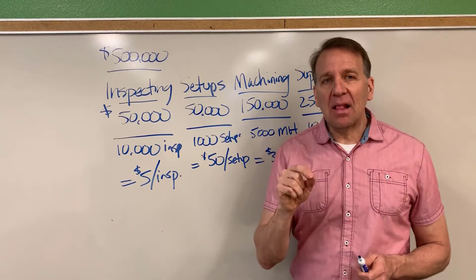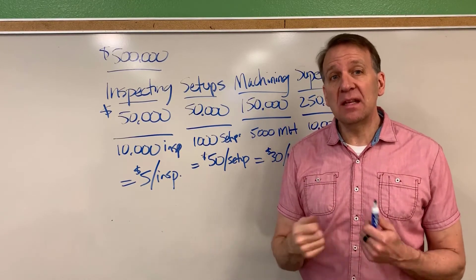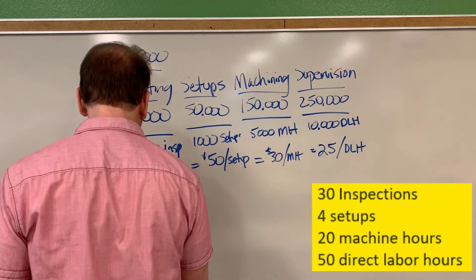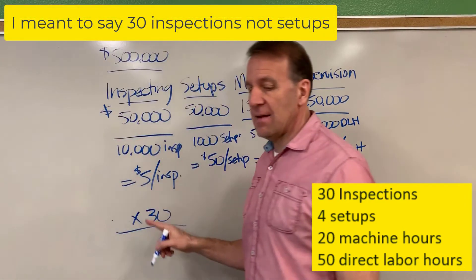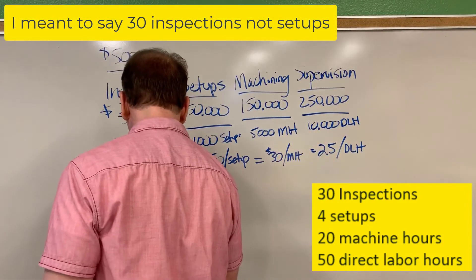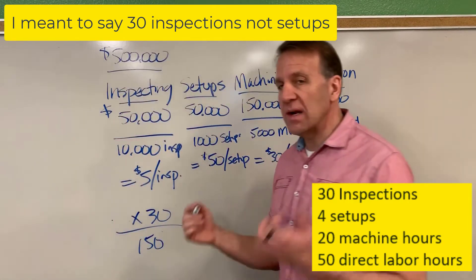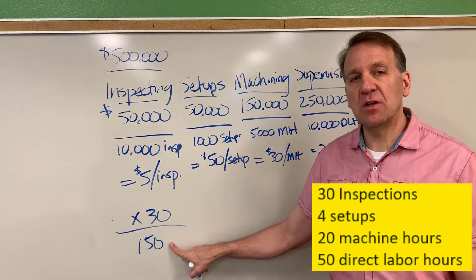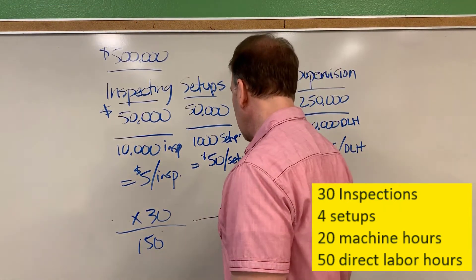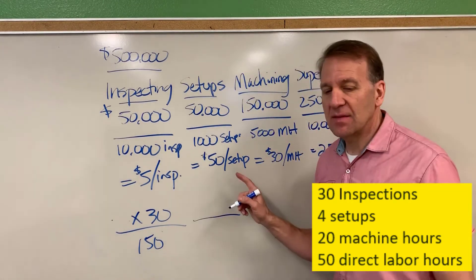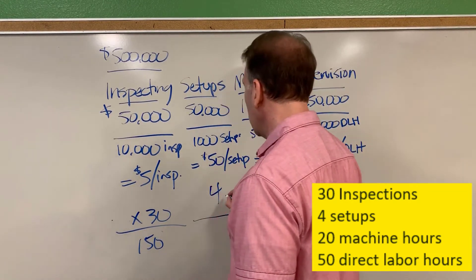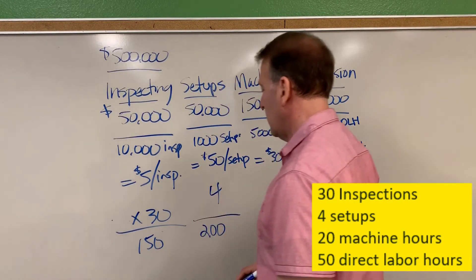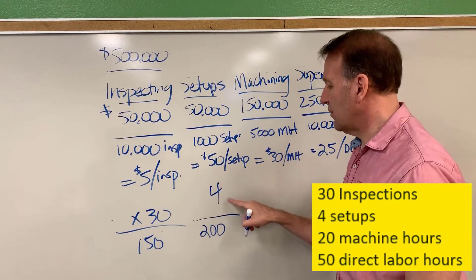All right, now how we allocate the overhead to the jobs. Once again, these numbers would need to be given to you. So let's assume that we have 30 inspections. So five times 30 for this job, let's say this is job 101. In job 101, there were 30 inspections. So we're going to allocate $150 of overhead into that job. Let's say that in this job, there were four setups. So four times 50 here gives me 200.